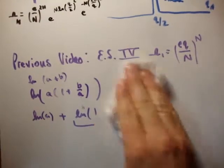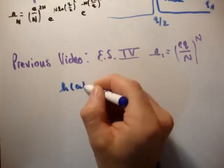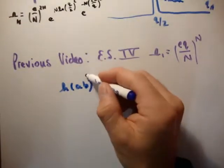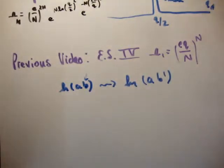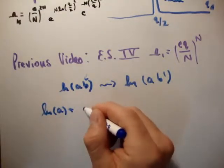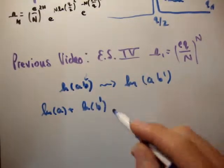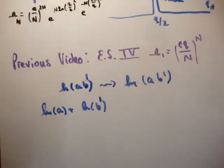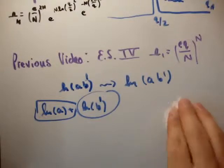One more thing to note: at some point I'll have the natural logarithm of a times b, but I'll be manipulating b to become b prime. Because log of a·b equals log of a plus log of b, I can manipulate b into b prime without touching a, and then recombine them at the end as log of a·b prime. So I'll completely ignore the factor a during the analysis and write it back in at the end - this keeps the mathematics cleaner.